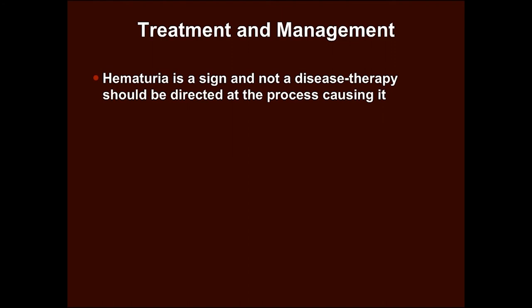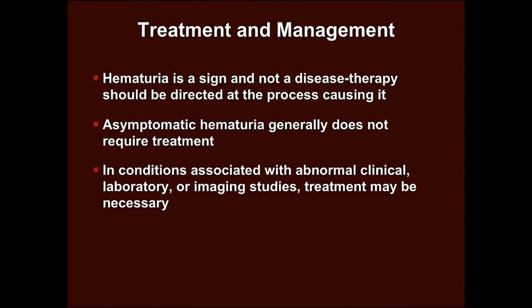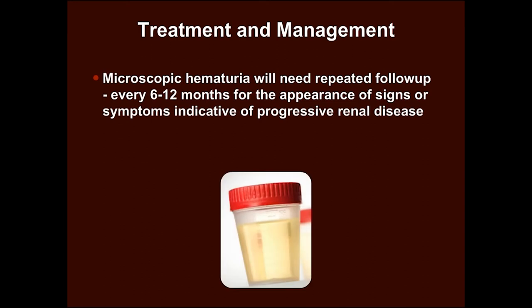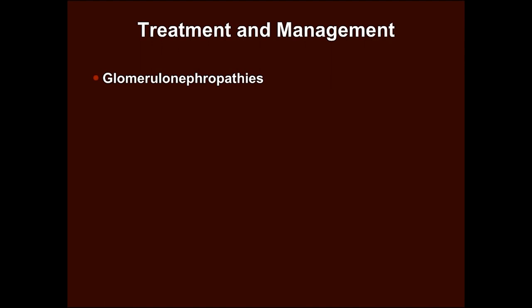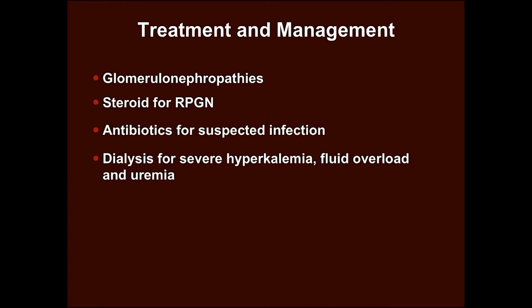Hematuria is a sign and not a disease; therefore, therapy should be directed at the underlying cause. Asymptomatic hematuria generally does not require treatment; in conditions associated with abnormal clinical, laboratory or imaging studies, treatment may be necessary. Microscopic hematuria will need repeated follow-up every 6-12 months for the appearance of signs or symptoms indicative of progressive renal disease. If signs and symptoms persist, full urologic evaluation must be undertaken. Treat for specific glomerulonephropathies; steroids can be given for rapidly progressive glomerulonephritis. Antibiotics for suspected infection; dialysis can be undertaken for severe hyperkalemia, fluid overload and uremia.